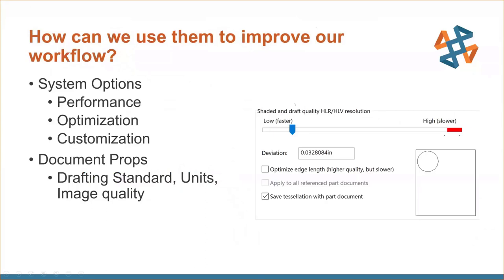So with that being said, how can we use these to improve our workflow? I've broken down both the system options and document properties into their own subsections. With system options, I'll be covering performance settings, optimization settings, and customization. Then document properties will go over drafting standard, units, and image quality.